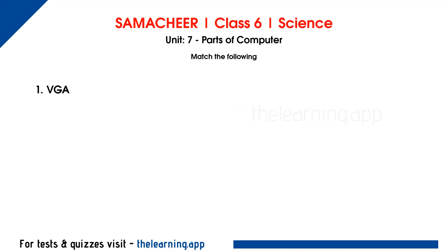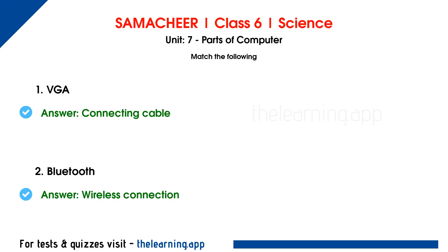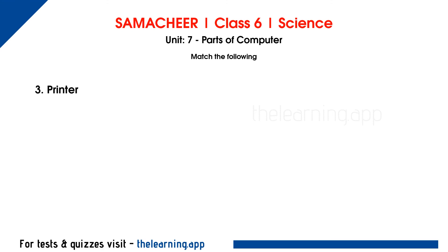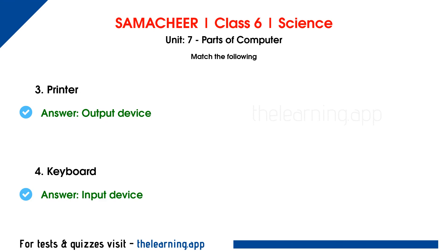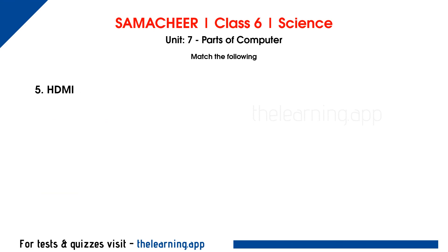Next, match the following. First: VGA — correct answer is connecting cable. Second: Bluetooth — correct answer is wireless connection. Third: Printer — correct answer is output device. Fourth: Keyboard — correct answer is input device. Fifth: HDMI — correct answer is connecting cable.